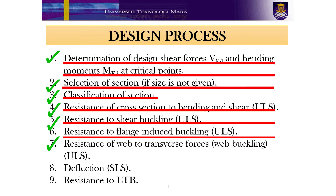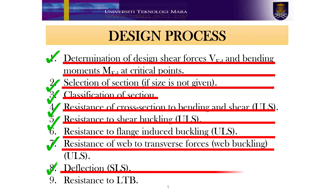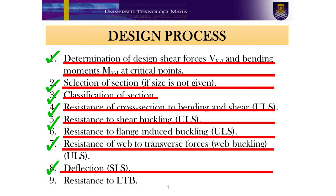Therefore, we have completed all the design checks for the given example. Hence, we can conclude that the 356×171×51 UB section in S275 steel is suitable to carry the uniformly distributed loading, where gk equals 8 kN per meter and qk equals 6 kN per meter.